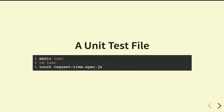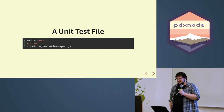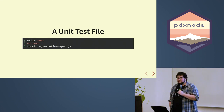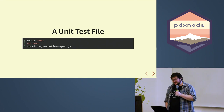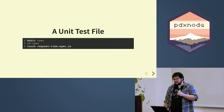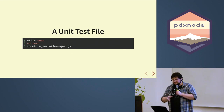We decided we want to write a unit test for this middleware. Mocha has some defaults: if you make a folder called 'test', Mocha assumes your test files are in there. If you make a test directory and put a file in it with a .js extension, it will find that file and execute it. By convention, we like to name these files with .spec.js — it's just a good way to visually tell 'this is a test and not a source file.' Some people like to put them next to the source files. The file we're going to create is request-time.spec.js.